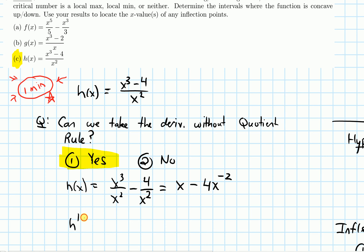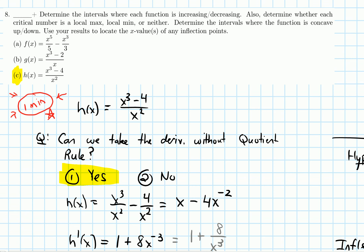From here it's easy to take the derivative. The derivative of x is one, and the next term gives plus eight x to the negative three. Simplifying to get rid of the negative exponent: one plus eight over x cubed. Notice we can take the derivative without the quotient rule, which saves time. Knowing multiple ways to do something is helpful on a timed test so we can pick the most efficient approach.